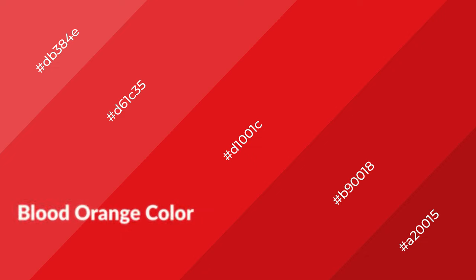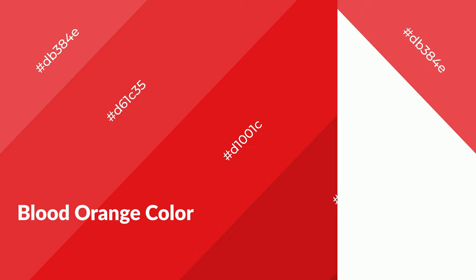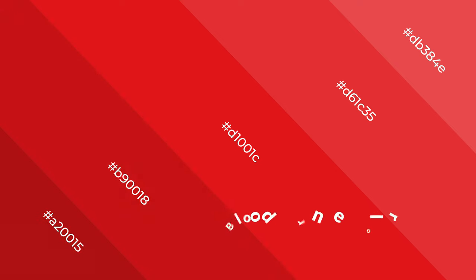Blood orange is a warm color and it emits cozier and active emotions. Warm colors are symbols of warmth, fire, heat, and sunshine. It also evokes joy, passion, love, and even anger. You can see them used in restaurants and gyms.